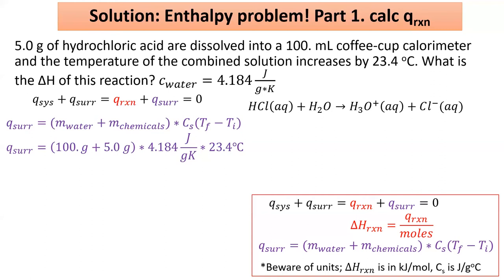Remember, the total mass is 100 grams of water plus 5 grams of HCl. Solving for this, I get 10,280 joules.